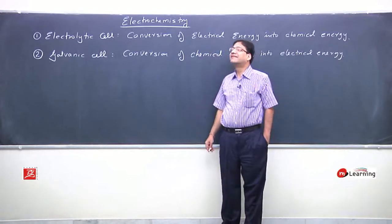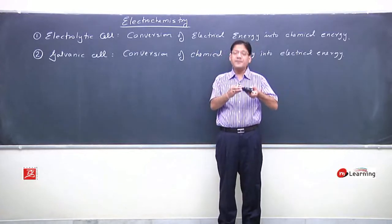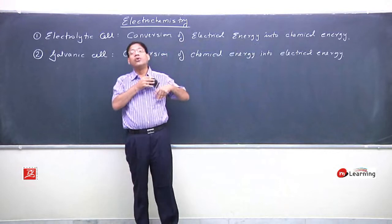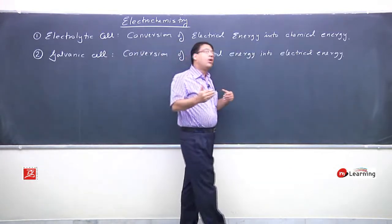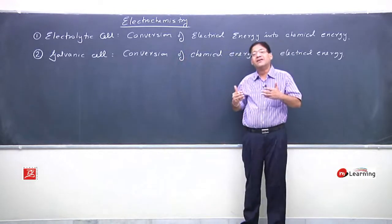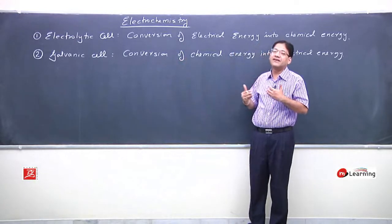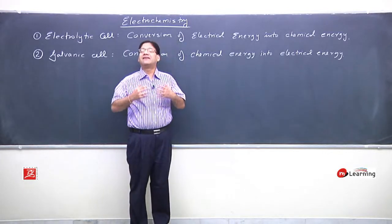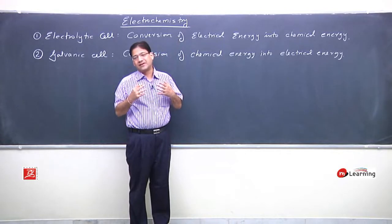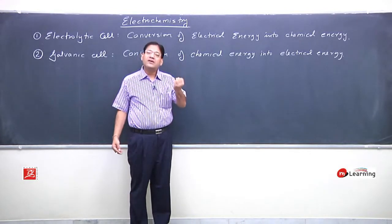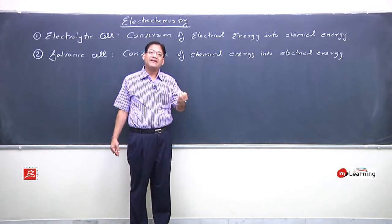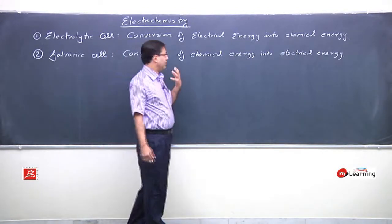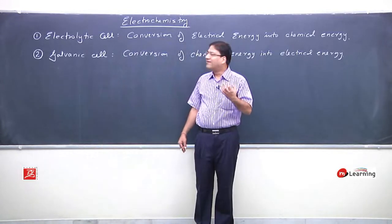Any battery is a galvanic cell. In the galvanic cell, the driving force is some chemical reaction, and the driven output is electric current and electric potential. As this phenomenon occurs, the stored chemical energy inside the battery decreases and its conversion into electrical energy — electrical work — takes place. Such a device we call a galvanic cell.